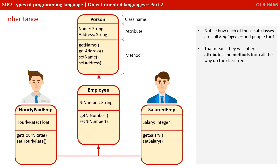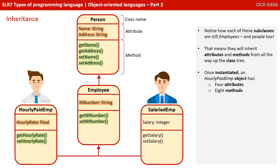Notice here how each of these subclasses are still employees, and of course employees are people. That means they will inherit attributes and methods from all the way up the class tree. Once instantiated, an hourly paid employee will have four attributes — one from hourly paid, one inherited from employee, and two from person — and eight methods: two from hourly paid, two inherited from employee, and four inherited from person. Similarly, once instantiated, a salaried employee object will also have four attributes and eight methods.